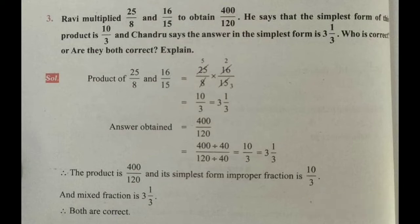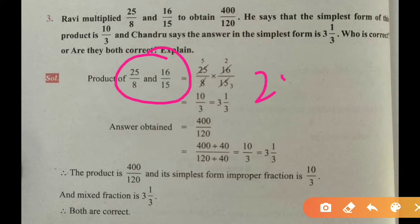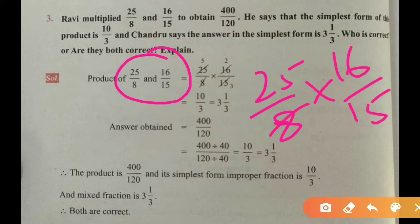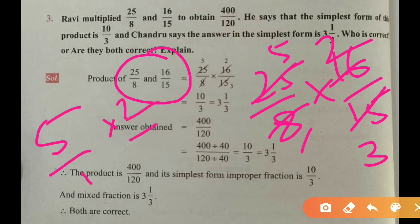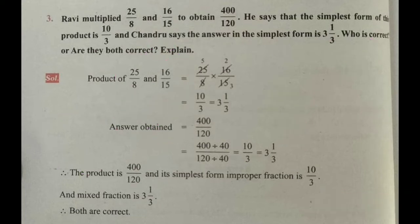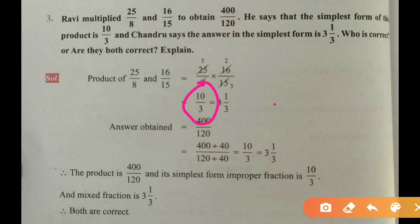First find the product of 25 by 8 and 16 by 15. Simplifying: 16 divided by 8 is 2, and 25 divided by 15 gives 5 by 3, so we get 5 by 1 into 2 by 3, which equals 10 by 3. So 10 divided by 3 is the answer as an improper fraction. Changing to mixed fraction gives 3 and 1 by 3.